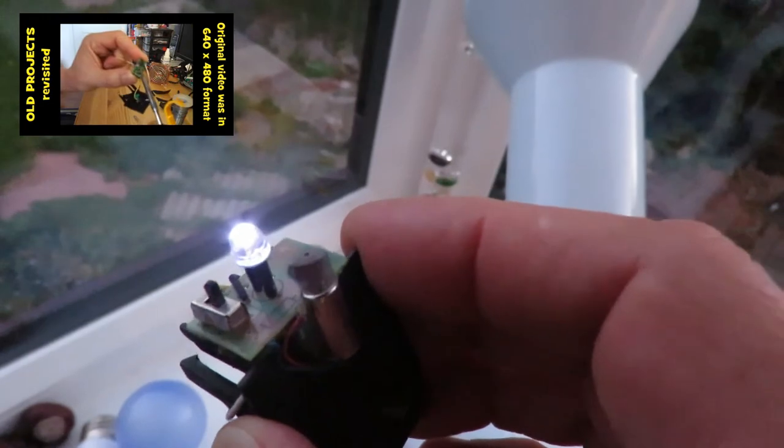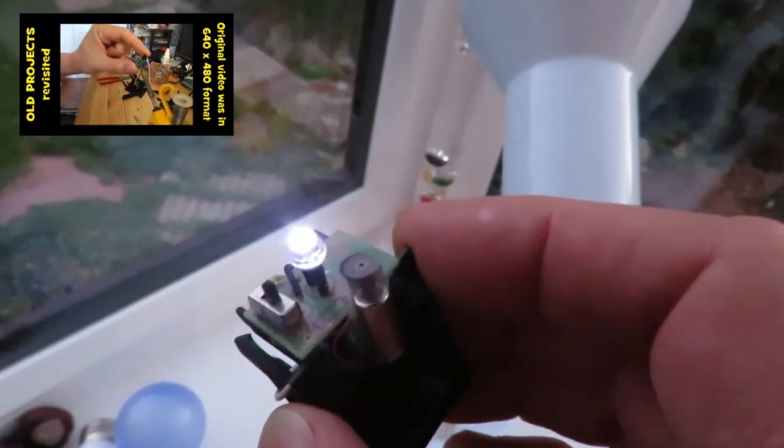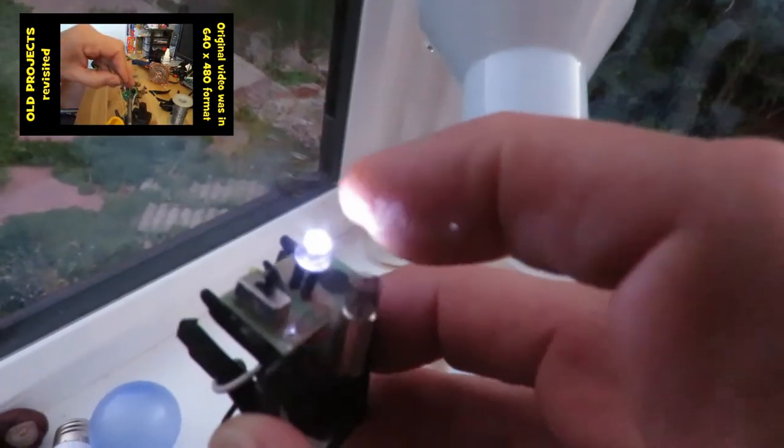And during the day it charges up and then when it gets slightly dark, like it is now, when the sun goes down, the light comes on, like it would in a normal garden light.